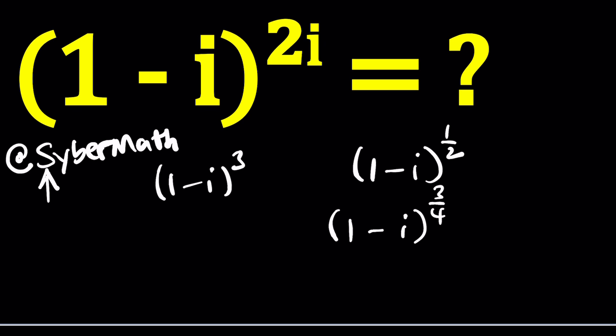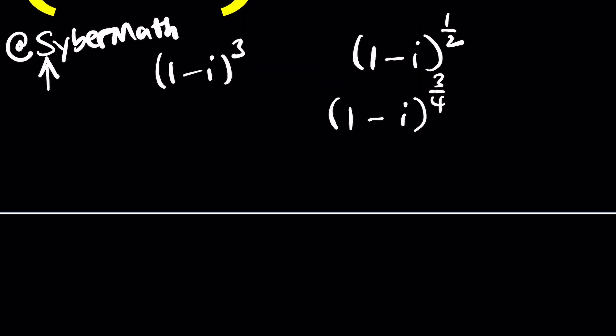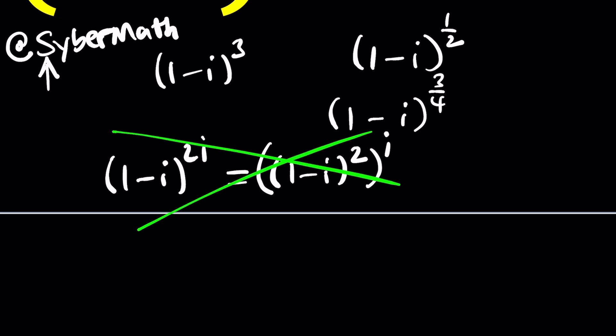So how do you raise 1 minus i to the power 2i? It's kind of weird, right? Maybe we can take 1 minus i and raise it to the second power and then whatever comes out we can raise it to the power i. Is this going to work? Some people say it doesn't. Because here's the problem. A to the power b to the power c equals a to the power bc and that equals a to the power c to the b if a, b, c are real numbers. But when they're complex, imaginary, you name it, then Houston we have a problem. We have to be very careful because it doesn't always apply.